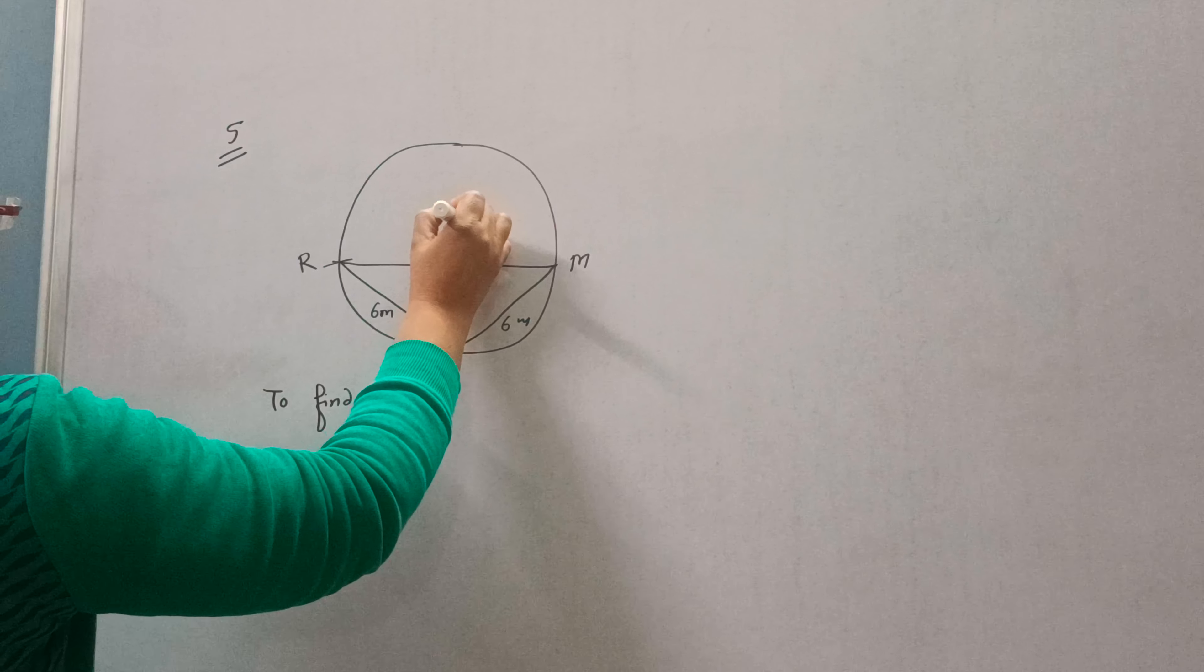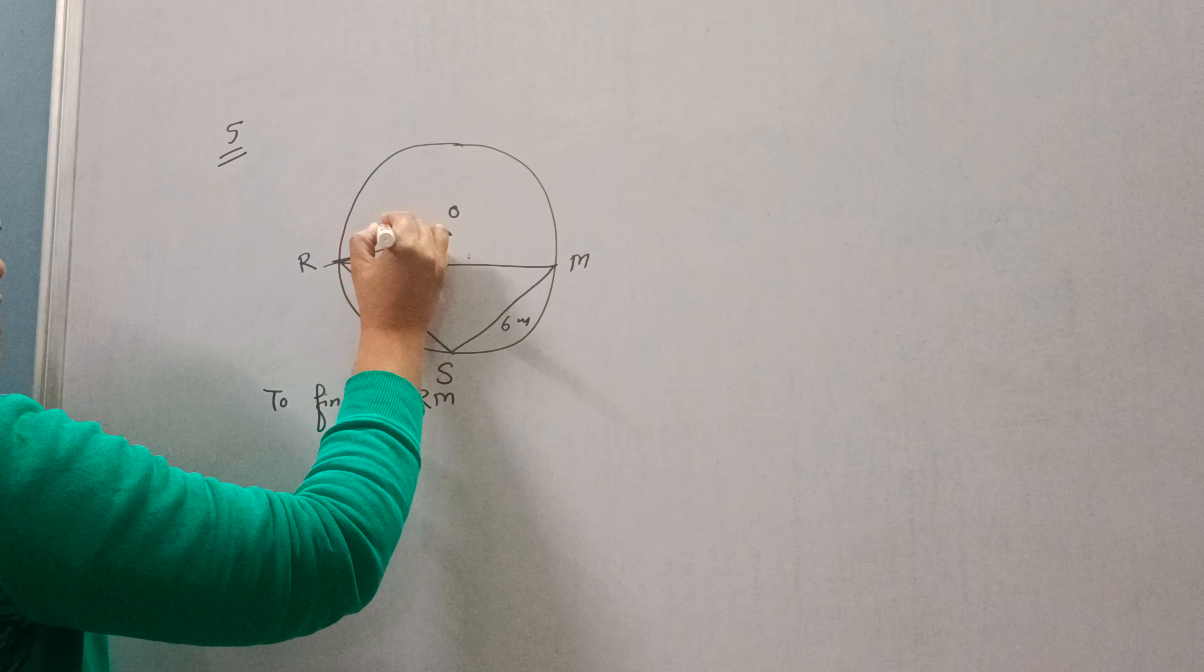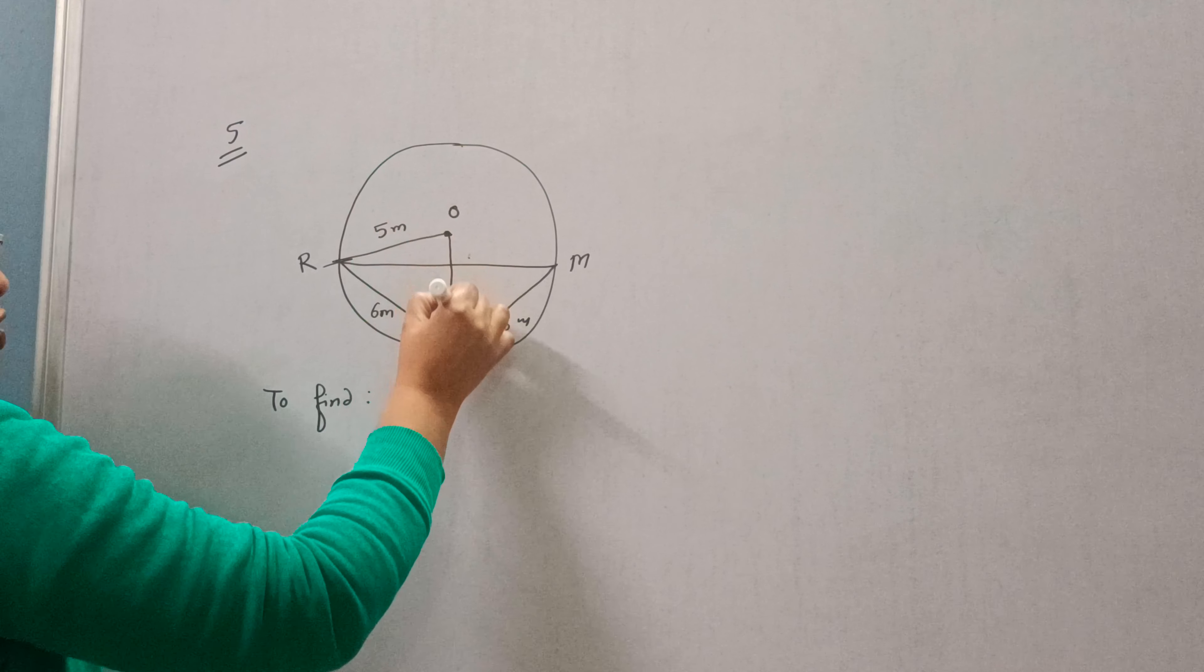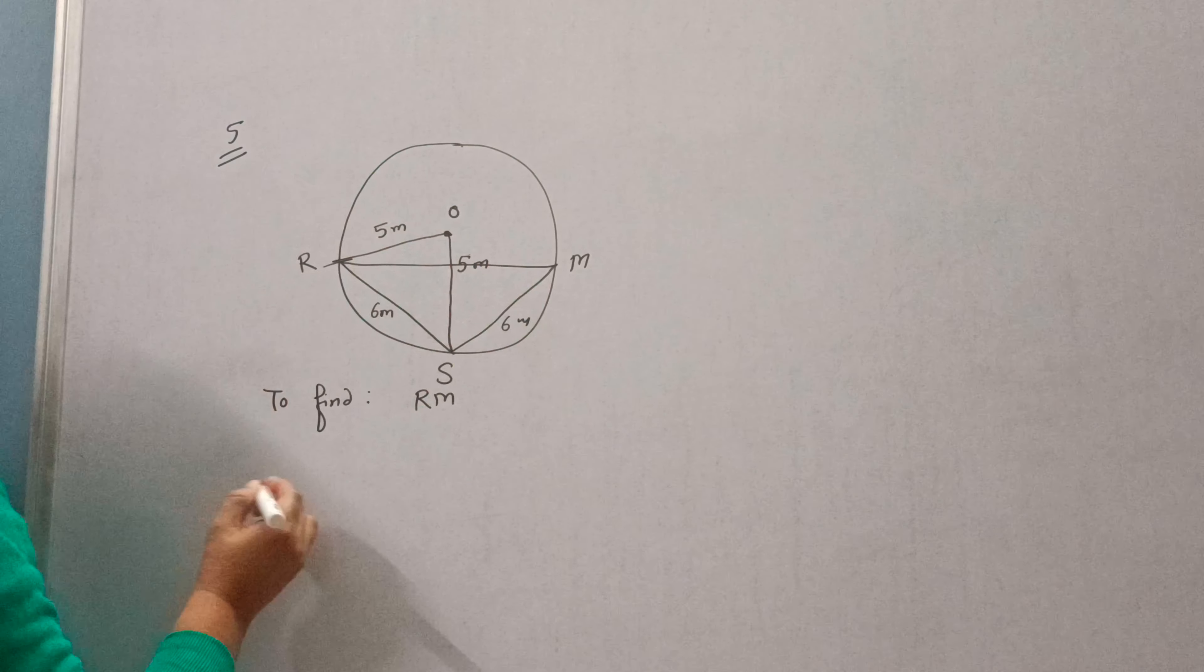Now, if O is the center of the circle, then OR is the radius 5 meters and OS is also 5 meters.